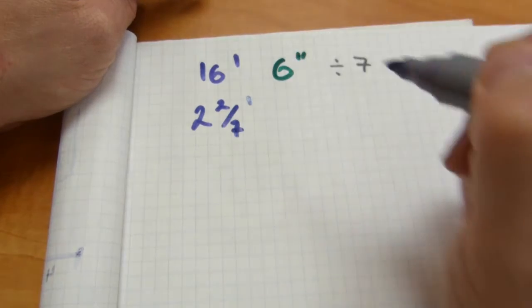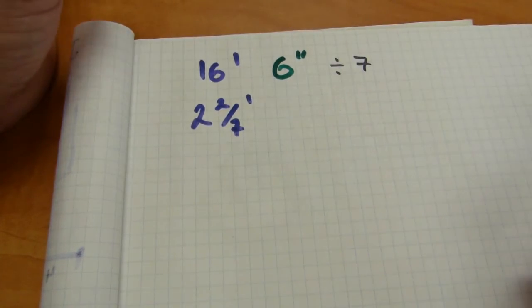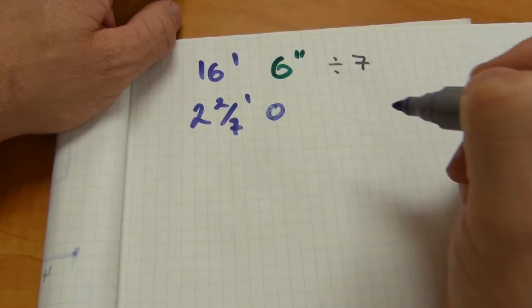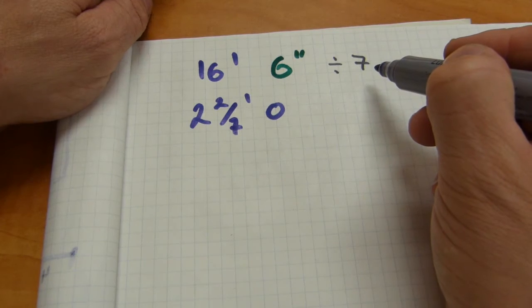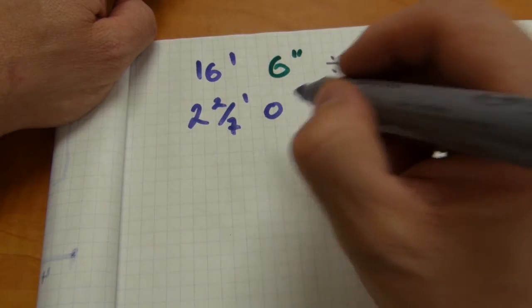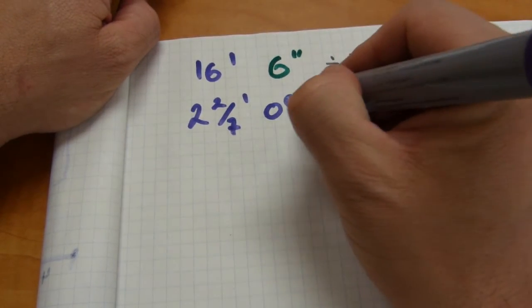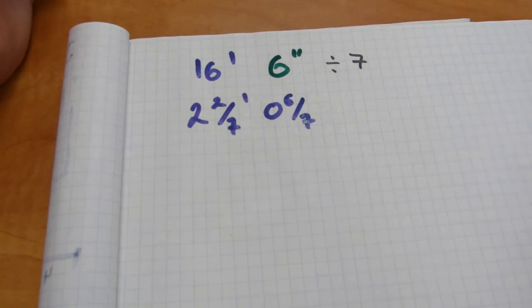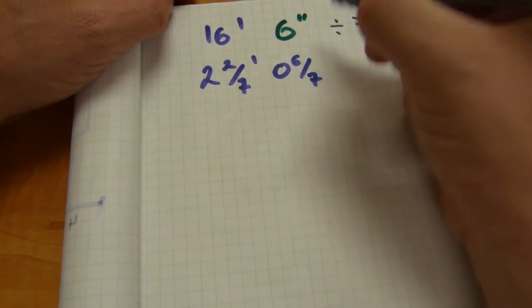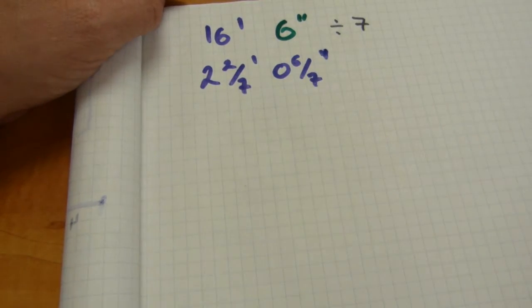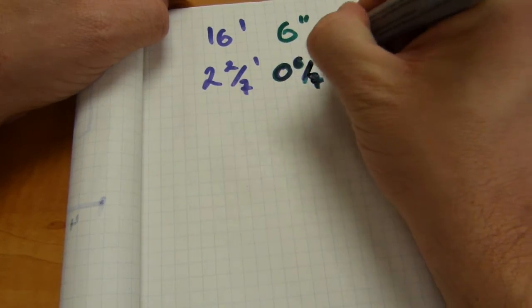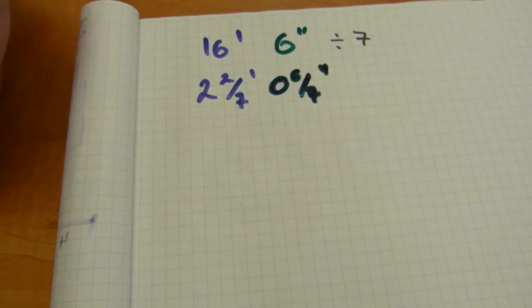The 7 goes into 16 twice. 2 by 7 is 14, and we have a remainder of 2. That's 2 sevenths of a foot. We'll deal with it. For now, just leave it in the feet column. And 7 doesn't go into the 6, so book the result. It's not that the 6 is going into the 7. Don't change the subject. The 7 is going into the 6. Zero times and book the result. And we have a fractional remainder of 6 sevenths of an inch.